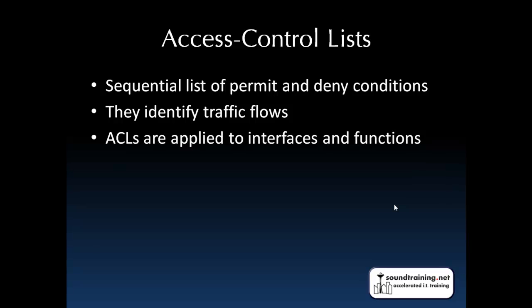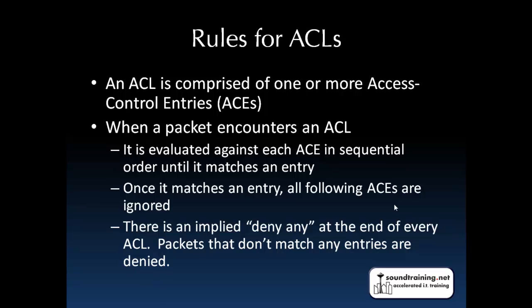And finally, access control lists are applied to interfaces. You create the list, but it's just floating around out there, not doing anything until you apply it to an interface. So you might say you want to restrict certain types of traffic coming inbound on the outside interface, or only allow a particular traffic flow across, say, a VPN tunnel.